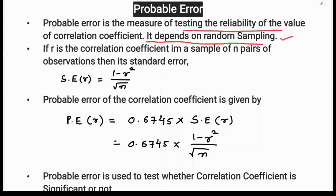If r is the correlation coefficient in a sample of n pairs of observations, then its standard error is given by the formula: one minus r squared divided by the square root of n. Here r is the correlation coefficient and n is the number of observations.